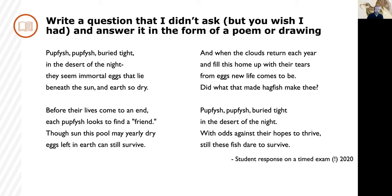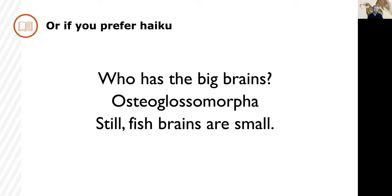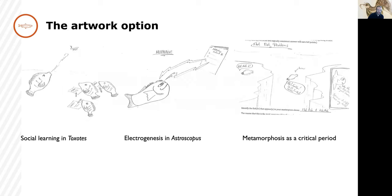Or if you prefer haiku, consider this reflection on the exceptionally brainy elephant-nosed fishes of Africa, which feature prominently in my units on neuroanatomy and electroreception: 'Who has the big brains? Osteoglossomorpha. Still, fish brains are small.' The artwork option has produced some compelling results as well, as shown here.